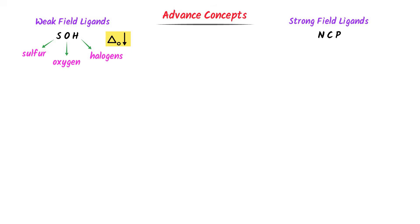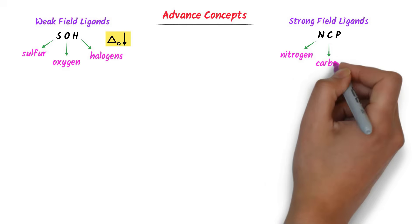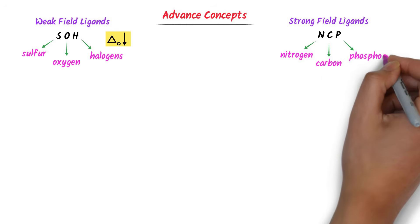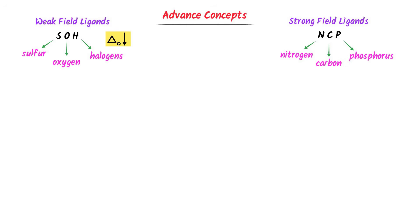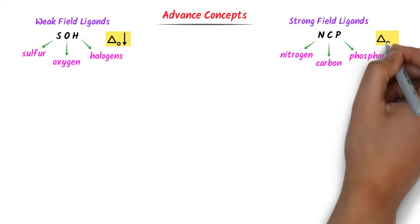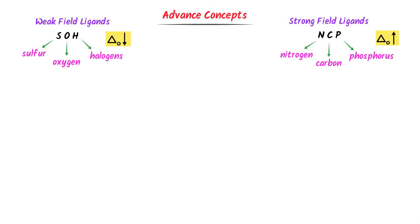On the other hand, NCP — N stands for nitrogen, C stands for carbon, and P stands for phosphorus. Ligands in which the donor atoms are nitrogen, carbon, or phosphorus are called strong field ligands. Remember that strong field ligands cause larger splitting of d-orbitals.